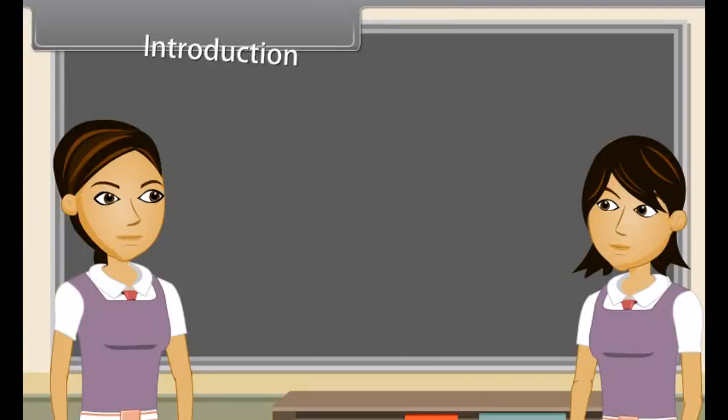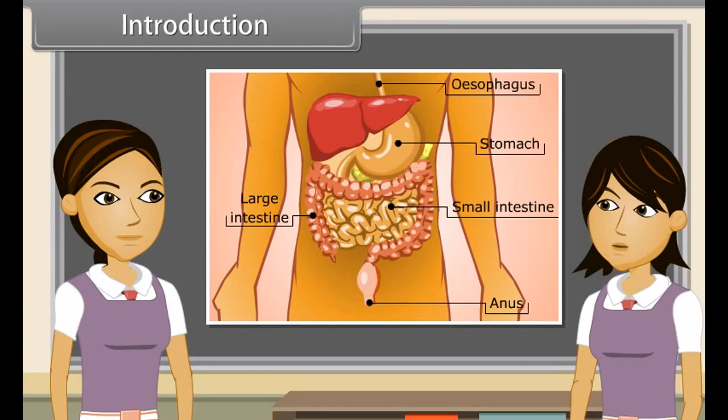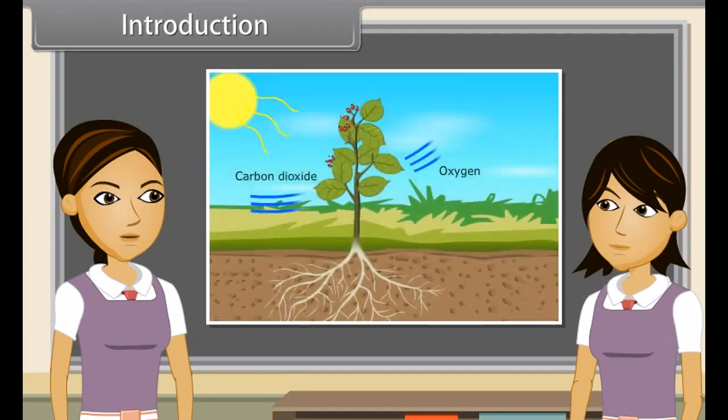Introduction. We know that all organisms perform some basic functions to keep themselves alive. Do you know what are life processes? The basic functions performed by living organisms to maintain their life on this earth are called life processes. Since living organisms perform various functions to maintain their life, energy is required. They get this energy from outside the body in form of food.